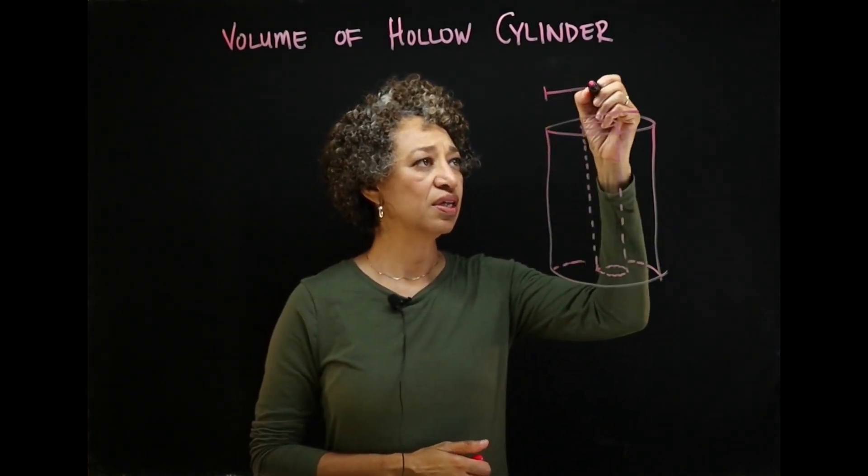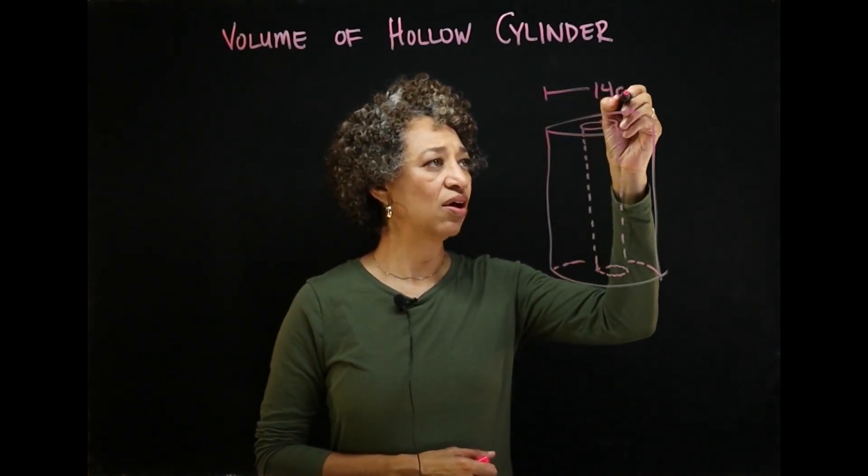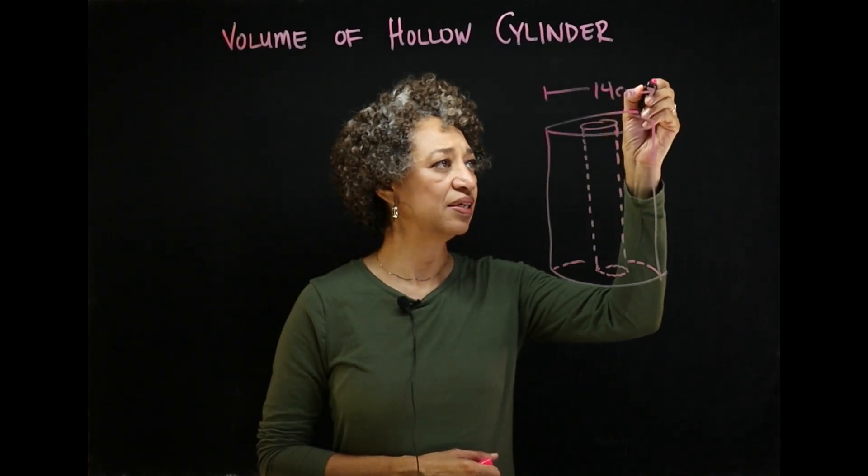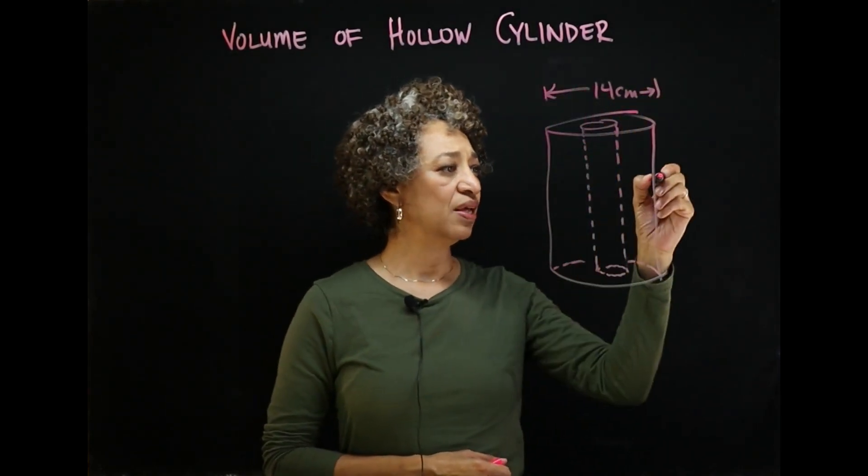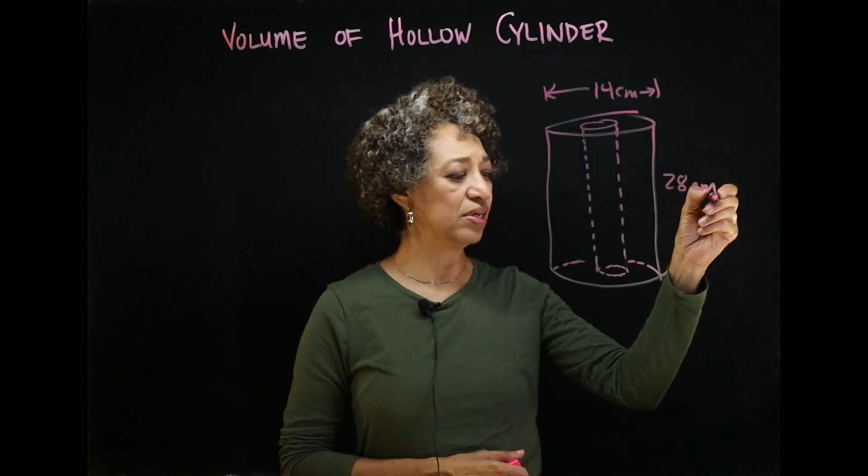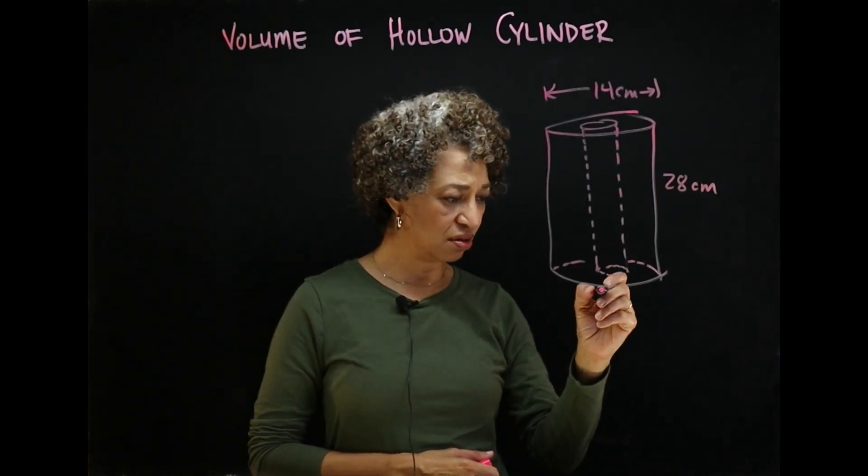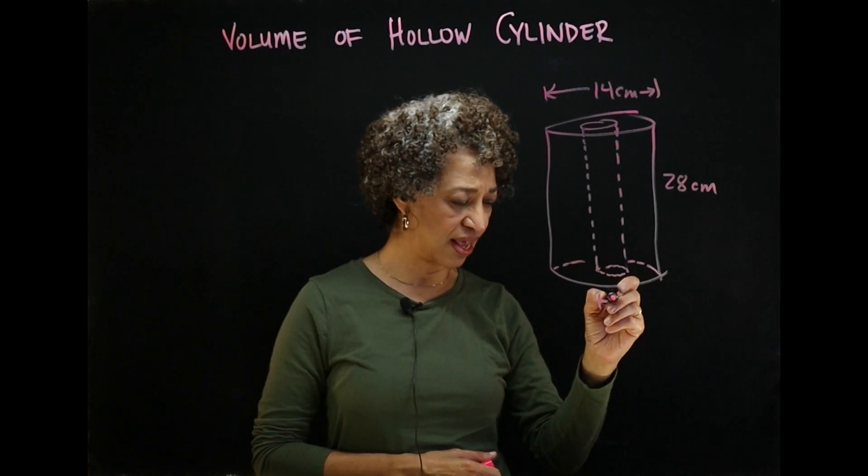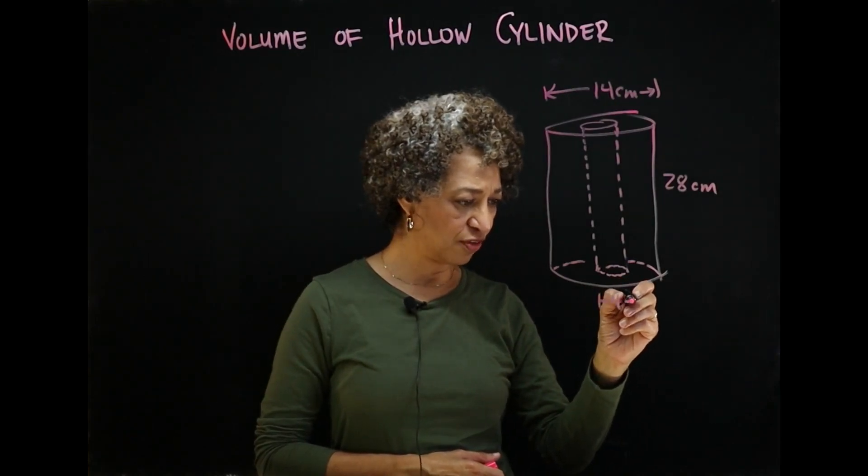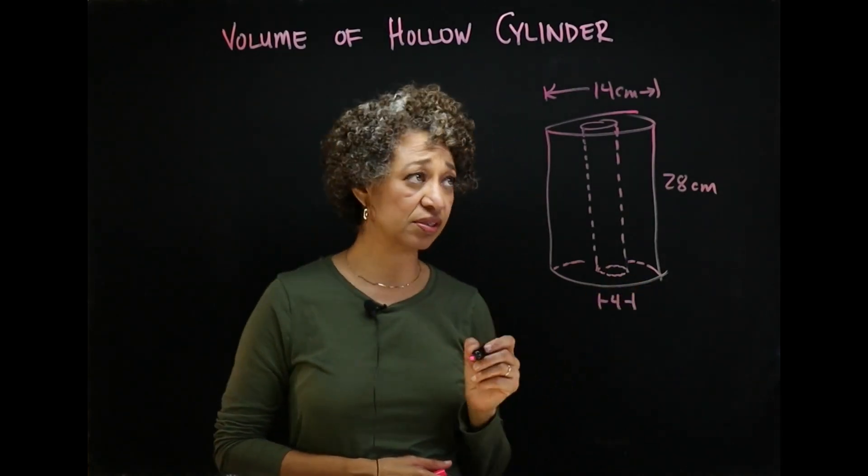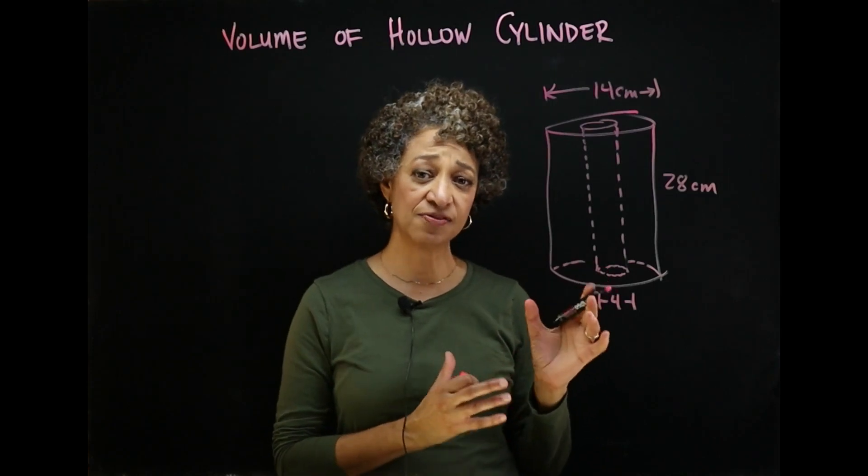Now I measured the diameter of the outer cylinder to be 14 centimeters. The height of the cylinder is 28 centimeters and the little cylinder has a diameter of 4 centimeters. Okay? So we're going to find the volume of this thing.